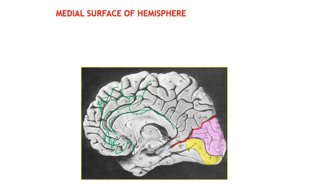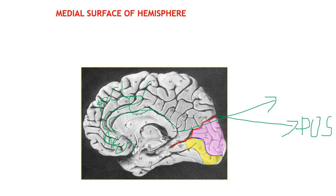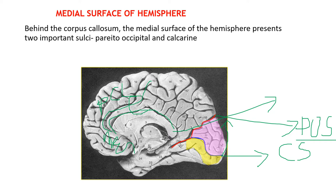Behind the corpus callosum — this is the posterior end of the corpus callosum — we have two important sulci: the parieto-occipital sulcus and the calcarine sulcus, which cuts through exactly at the occipital pole. The parieto-occipital sulcus is located 5 cm above the occipital pole. So this medial surface behind the corpus callosum presents two important sulci: parieto-occipital and calcarine.